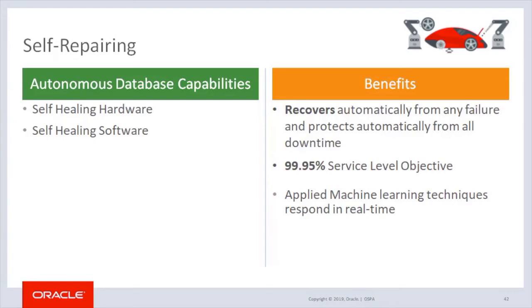The Autonomous Database provides protection against all unplanned and planned downtime, and rapid automatic recovery from outages without downtime. There is a broad range of events that can cause database downtime, including component, storage, and server failures, database crashes, or even site-wide or regional outages due to a natural or man-made disaster. Data corruption that can cause incomplete backups or render the data useless.